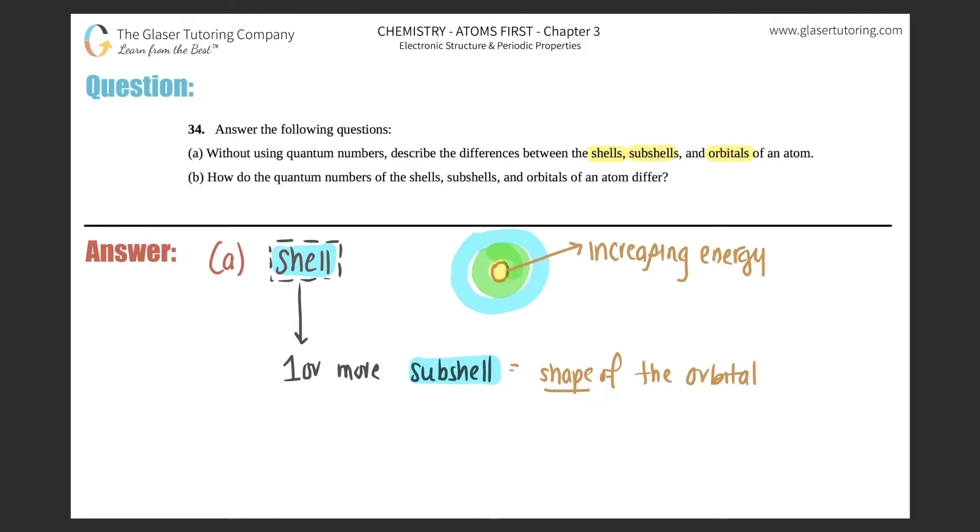So that's what a subshell will tell you. Now if you keep going within a subshell, you could have one or more orbitals. So that's the third part. What are specific orbitals? The orbitals are the exact orientation of the orbitals. Now inside of an orbital there are a max of two electrons that can be inside one orbital at a time. So there's always a max of two electrons inside that are residing inside an orbital.